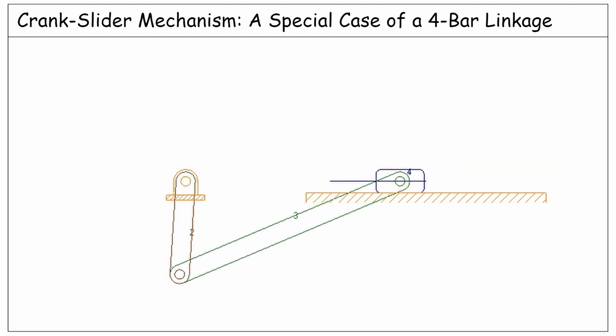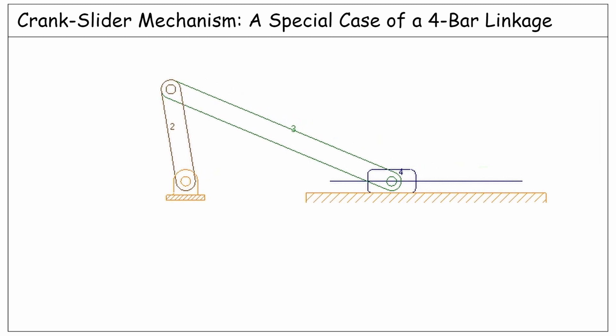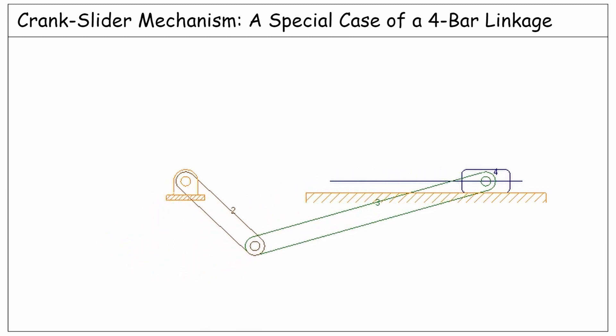So, we could make a slider crank mechanism from a four-bar linkage simply by replacing one of the side links with a slider moving over the ground, and assuming an infinite length for the replaced link if we want a rectilinear motion.